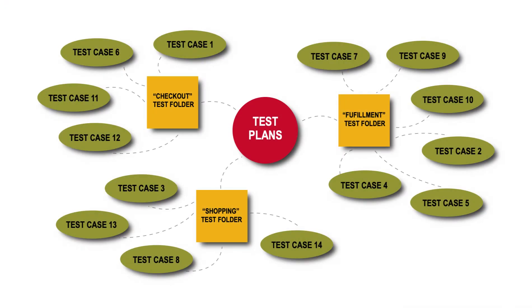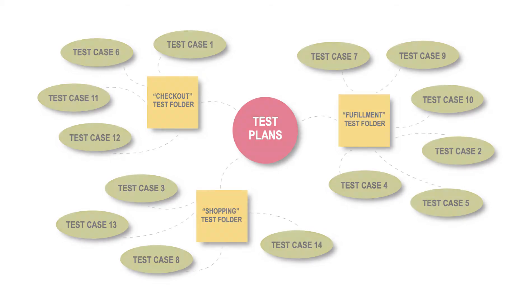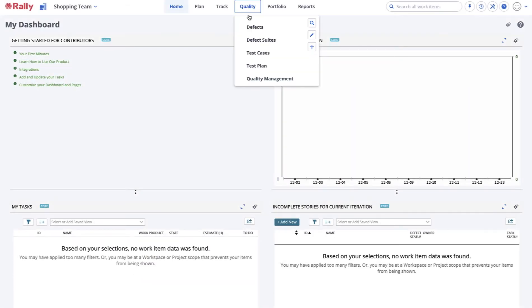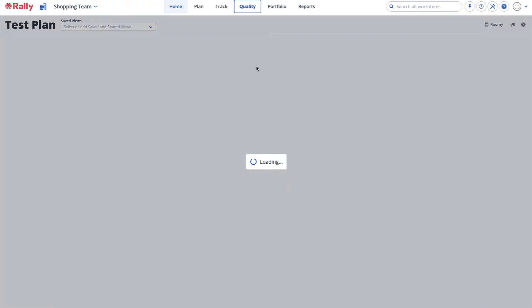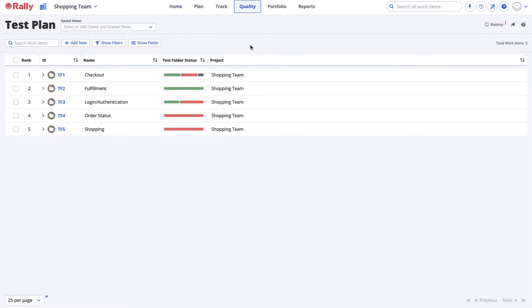Although test cases are created on an ongoing basis, once there's a group of test cases that you'd like to reuse, you can organize them into a test plan, also called a test folder, according to their function. This is done from the test plan page in Rally, which is located under the Quality menu. For example, you can organize the checkout tests into a test folder containing all the test cases needed to test the checkout function of our shopping cart.